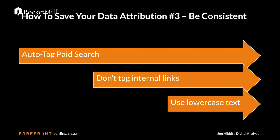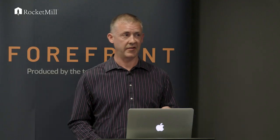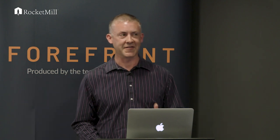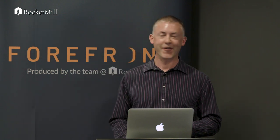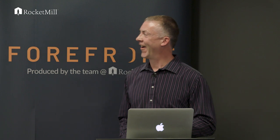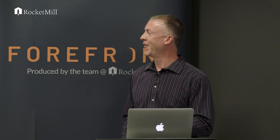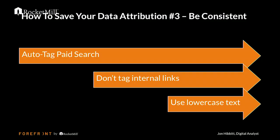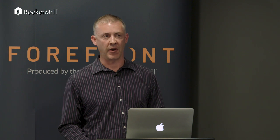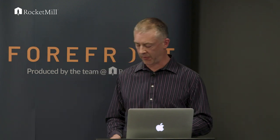Let's get into number three: consistency. Things that critically damage your data attribution include not using auto-tagging for platforms like Bing in paid search, tagging internal links — just don't do that, it's going to really hurt you — and not using lowercase text. In terms of recommendations there are loads, but of them all, these are the three that are really going to help you out.